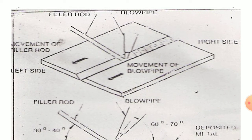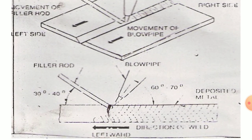In the left weld technique picture, you can see the filler rod and blow pipe on the right-hand side, with the direction of weld moving from right to left. The movement of the blow pipe — the welding torch — faces that direction. The picture below shows the different angles at which the torch tip must be maintained relative to the work piece. These pictures represent the left weld welding technique.